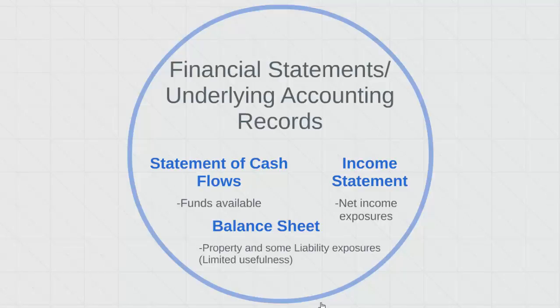The balance sheet is especially useful for identifying asset exposures and the income statement for business income exposures. But all of these have significant limitations because accounting values or book values are not the same as replacement cost or what it would cost the organization to replace lost property or lost income.